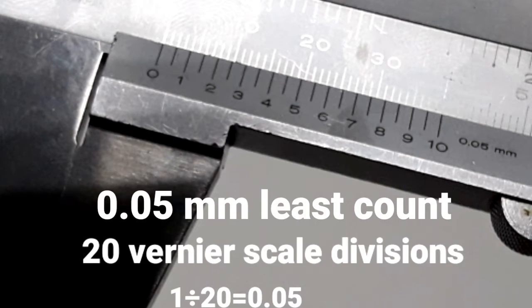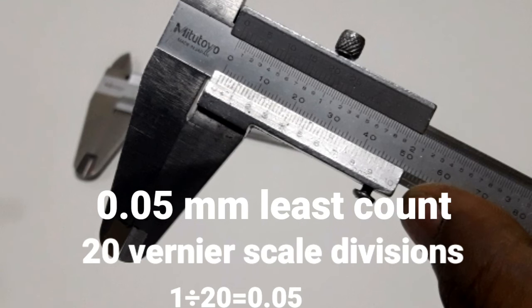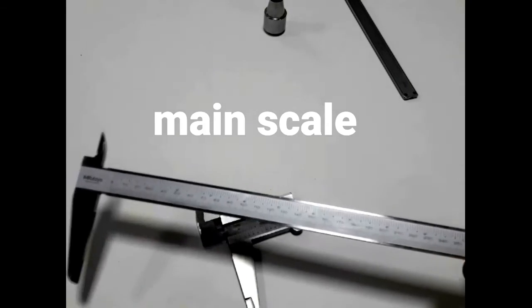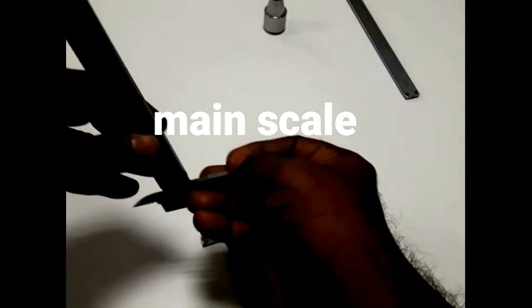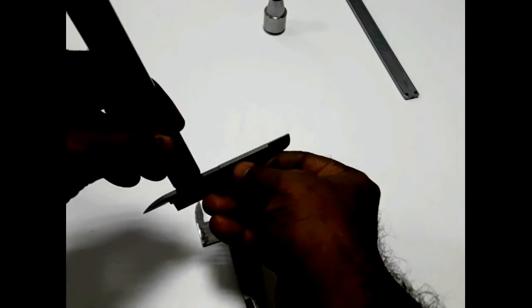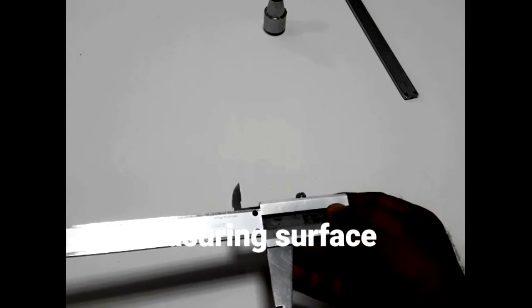Vernier calipers are available in different length and accuracy. Some vernier calipers having 0.05 mm accuracy, and some of them having 0.02 mm accuracy.